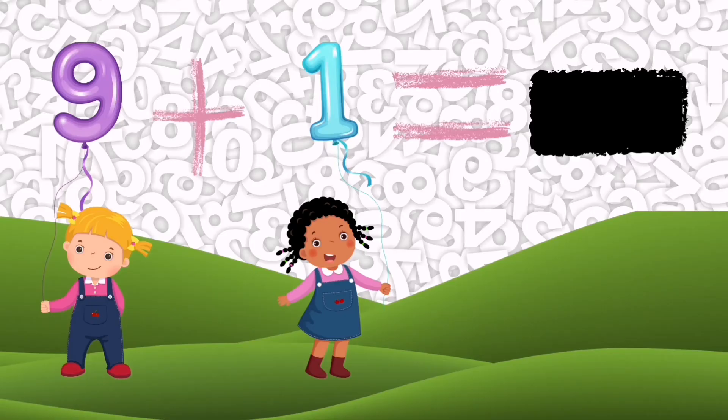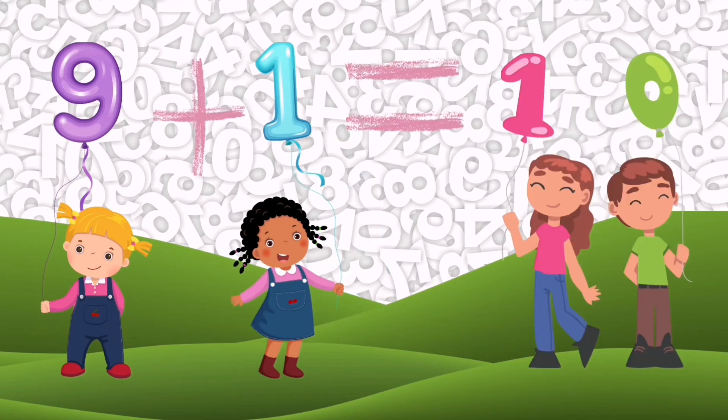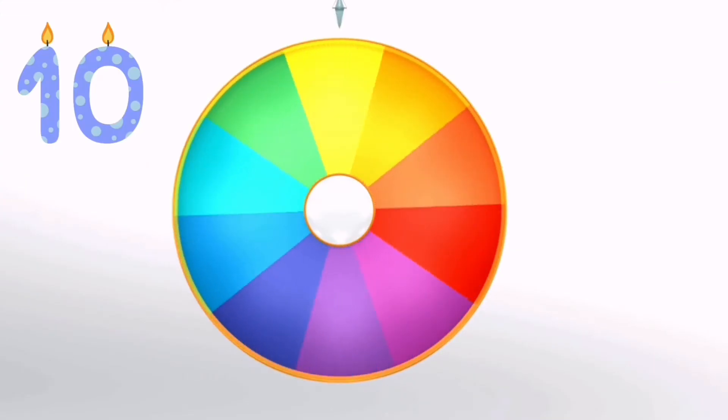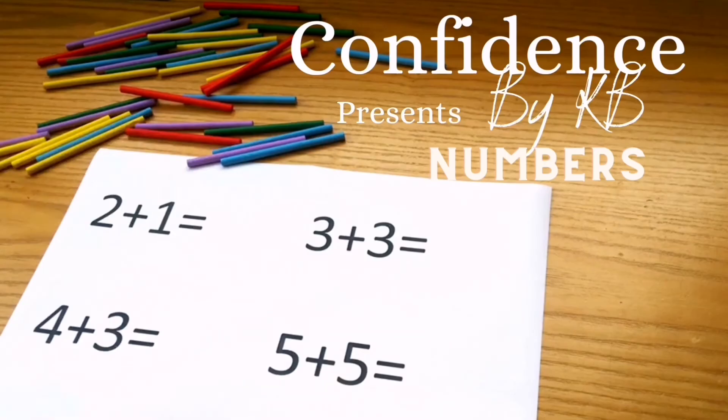9 plus 1 is equal to 10. 10 colours. Do you see them all go round? I wonder what it's going to stop on.